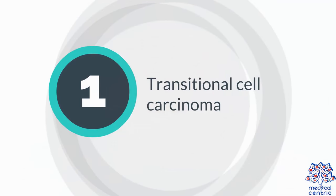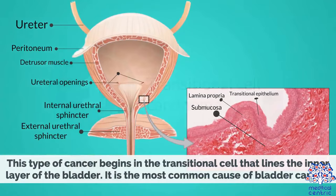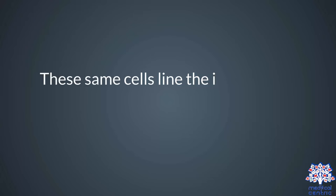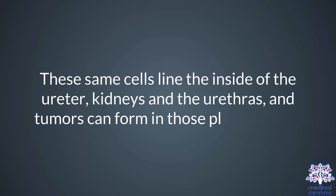Transitional cell carcinoma. This type of cancer begins in the transitional cells that line the inner layer of the bladder. It is the most common cause of bladder cancer. These same cells line the inside of the ureter, kidneys, and the urethra, and tumors can form in those places as well.